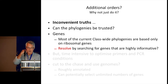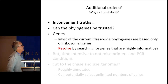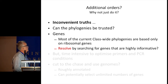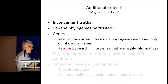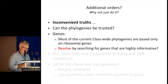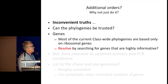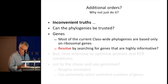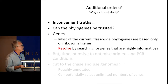So why not just do it? A couple more inconvenient truths. First: can the phylogenies I've been showing really be trusted? Probably not, for two reasons. The first relates to genes — most of the current class-wide phylogenies are based only on ribosomal genes. That's easy enough to resolve, perhaps, by just adding a few more genes. You could do this in an ad hoc way, just use the genes that everyone else uses and go back into the lab.